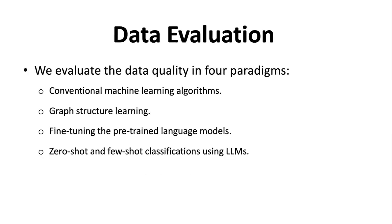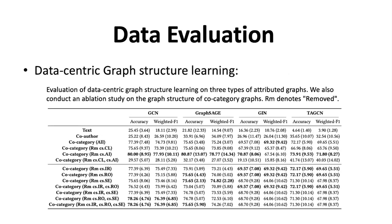We evaluate the data quality in four paradigms: conventional machine learning algorithms, graph structure learning, fine-tuning a pre-trained language model, and zero-shot and few-shot classification using large language models. In our experiment, we found that data-centric graph structure learning can outperform the other three paradigms.